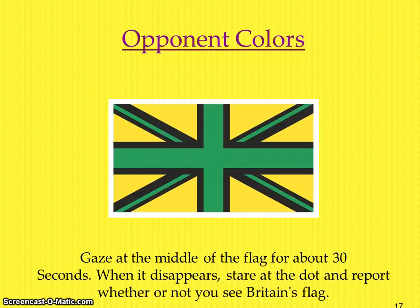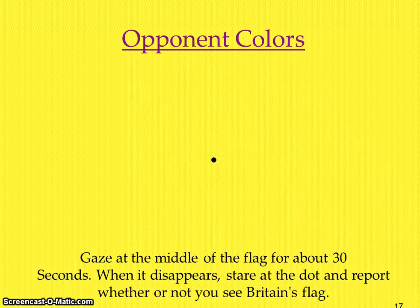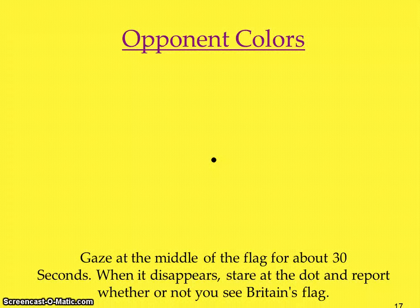The opponent color theory says that we wear down certain receptor cells — certain cones — and when we then look at a white surface, after those cones have been worn down, we see the opponent color. Visual information is processed in terms of opponent colors: red's opponent color is green, blue's opponent color is yellow, and black's opponent color is white. This helps explain afterimages. If you stare at that flag long enough and then it disappears, staring at a dot, you should see Britain's flag's colors — because you were looking at green and yellow, and the opponent colors for green is red and for yellow is blue, producing the afterimage of Great Britain's flag.